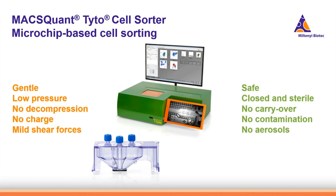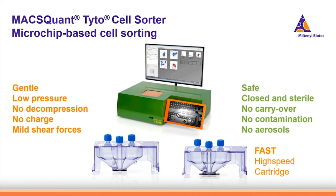Microchip-based cell sorting is truly gentle. Cells do not get decompressed or charged, and only low pressure and mild shear forces are present. Another advantage is that sorting in a closed and sterile cartridge is safe — there is no carry-over, no contaminations, and no aerosols are produced. If you are interested in high-speed sorting, we also offer our high-speed cartridge for fast sorting performance.